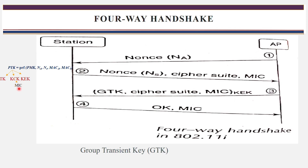The MIC function is used to check integrity, and that message is forwarded to the access point. When the access point receives the message, it performs the same function using the KCK key to compute the message integrity check. If the computed MIC value matches the received MIC, then the access point confirms that the message is integrity protected — no one is allowed to modify it. After confirmation, it sends a confirmation to all stations.